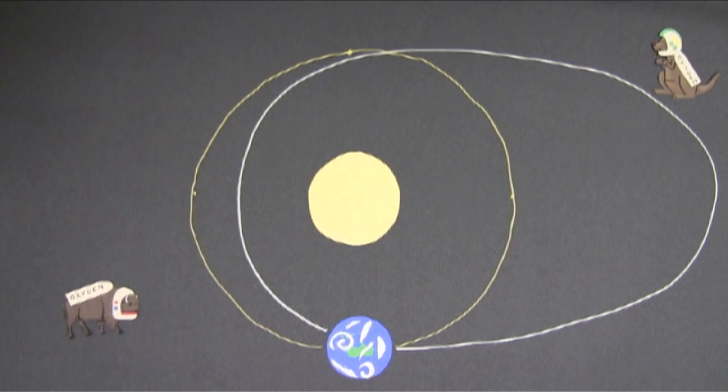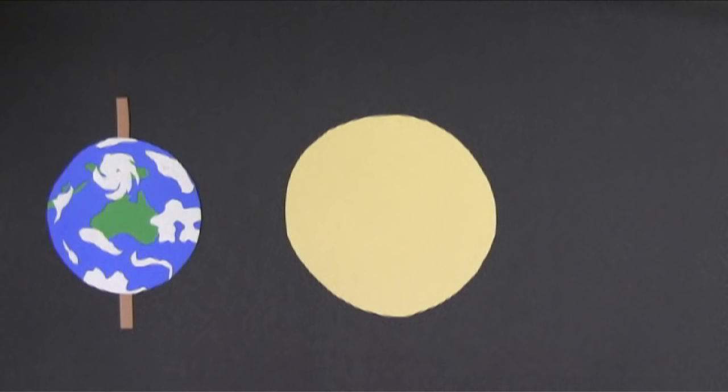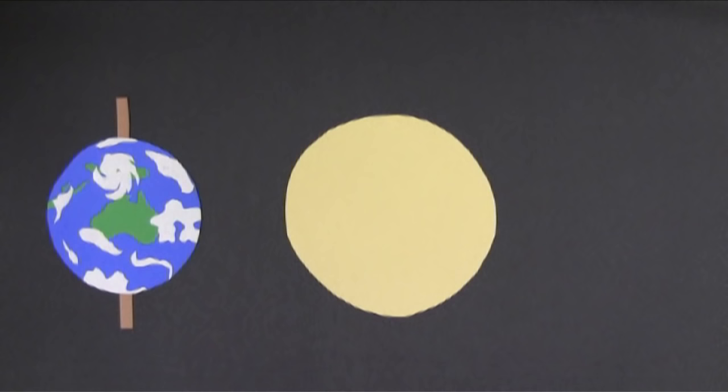So it's not the closeness of the Earth to the Sun that causes the seasons. To see what's actually at work, we have to look at the orbit from the side. In our side view, the Earth is revolving around the Sun in this orbital plane here. It takes one year to go through a full orbit, 365 days.